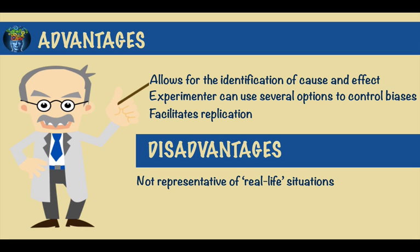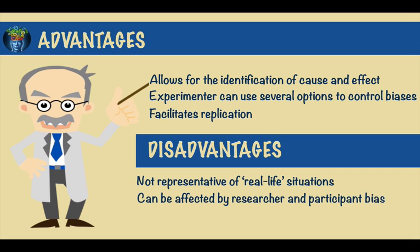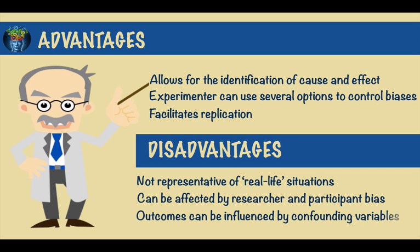On the other hand, this type of research occurs in labs and as such is not representative of real-life situations. They can be affected by researcher and participant bias, and the outcome can also be influenced by confounding variables, because these are very difficult to identify and control.